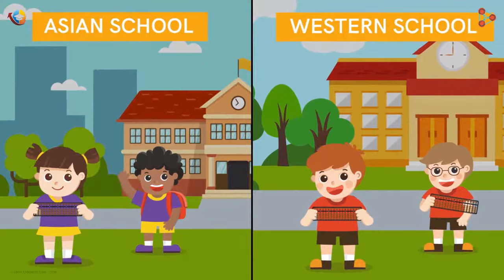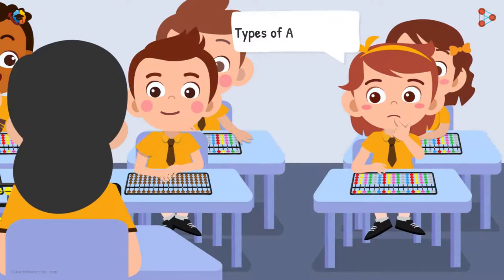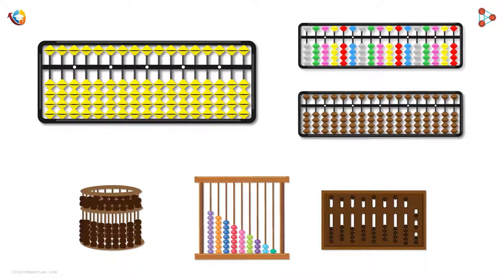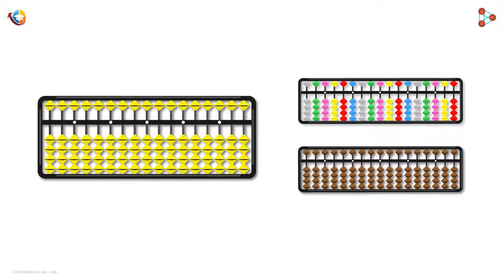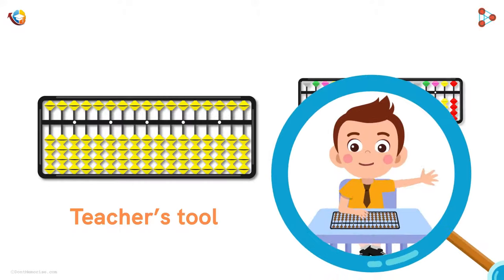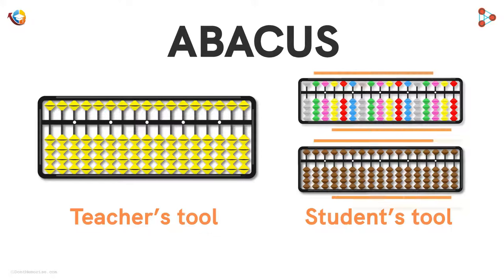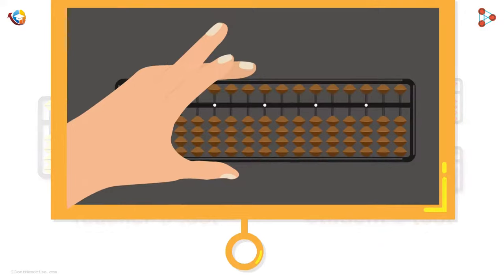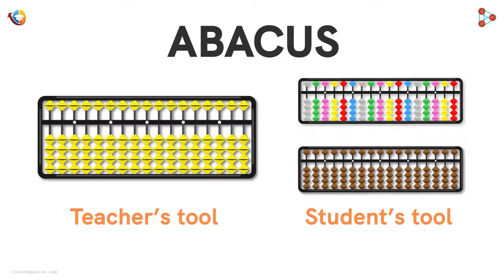Yes, Ruby, I see you have a question. You want to know how many types of Abacus tools are available? There are different types of Abacus tools available, but these are the most common ones. The bigger tool that you see here is the teacher's tool, which means it's my tool. And the two smaller tools are the student's tool, which means it is your tool. Because now you're learning the basics of the Abacus, you might get any one of these tools — the colourful one or the brown one — to practice hands-on and to calculate. But working on both of these is the same, alright?